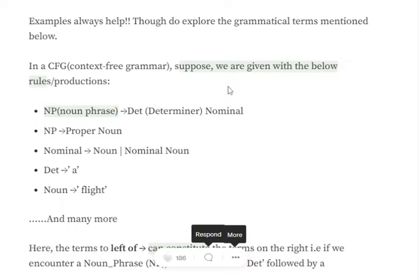I think this can be a bit confusing. So let's see an example. Assume that we have these particular production rules for a CFG. Noun phrase arrow determiner nominal. Noun phrase proper noun. Nominal noun or nominal noun. Determiner is 'a'. Noun is 'flight'.